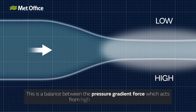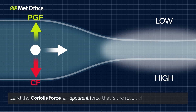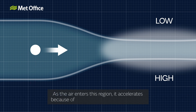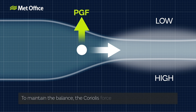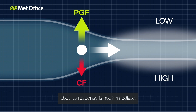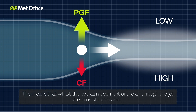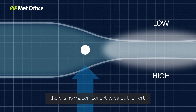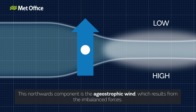Geostrophic balance is a balance between the pressure gradient force, which acts from high to low pressure, and the Coriolis force — an apparent force that is the result of the Earth's rotation. As the air enters this region, it accelerates because of the increased pressure gradient. To maintain the balance, the Coriolis force would also have to increase, but its response is not immediate. This means that whilst the overall movement of the air through the jet stream is still eastward, there is now a component towards the north. This northwards component is the ageostrophic wind, which results from the imbalanced forces.